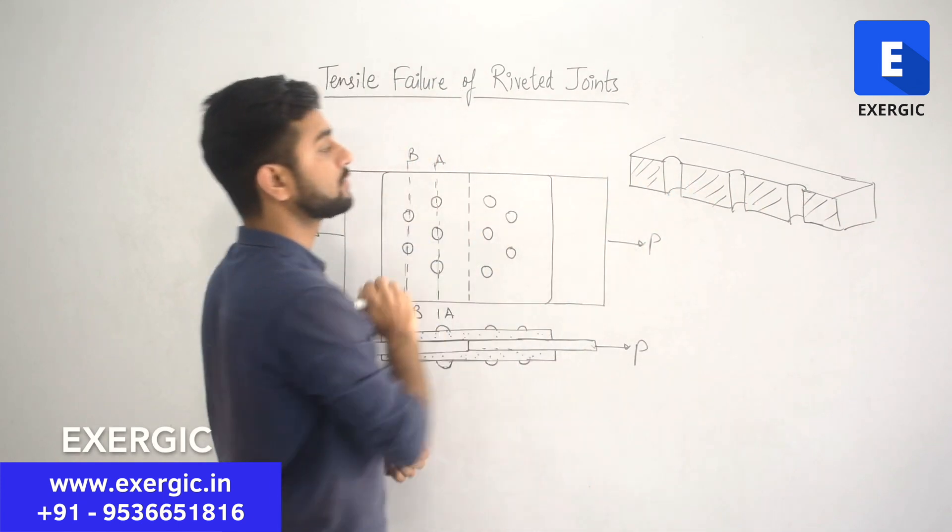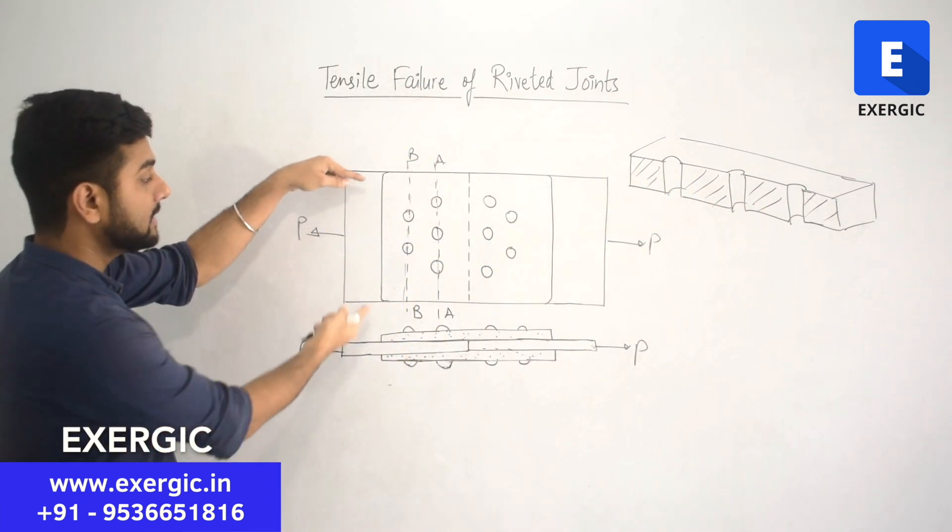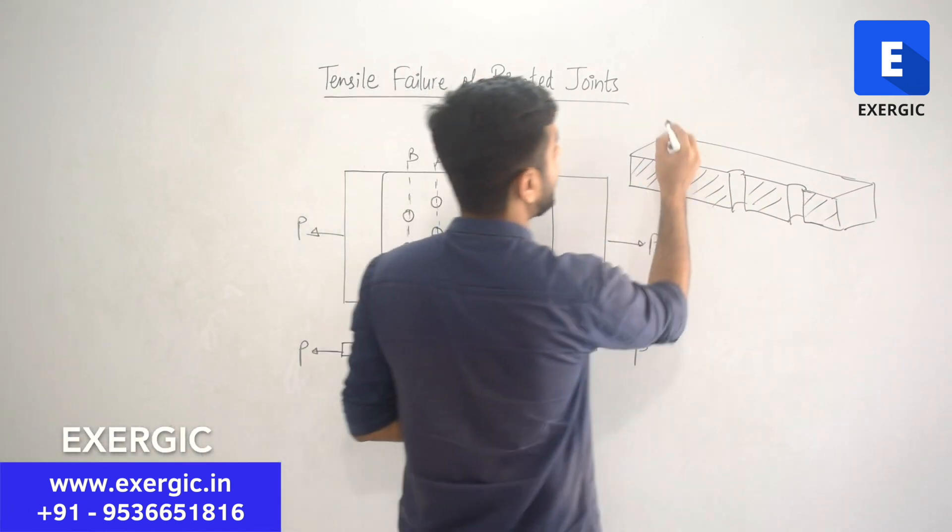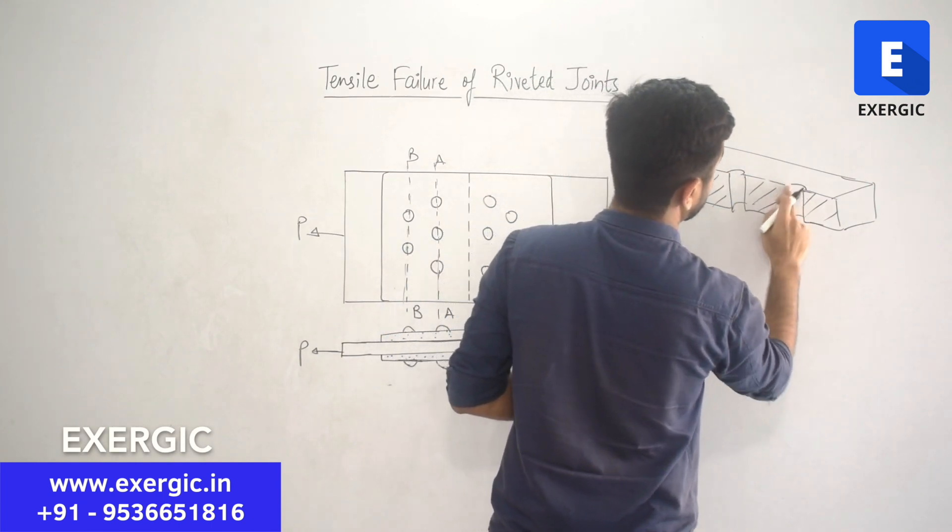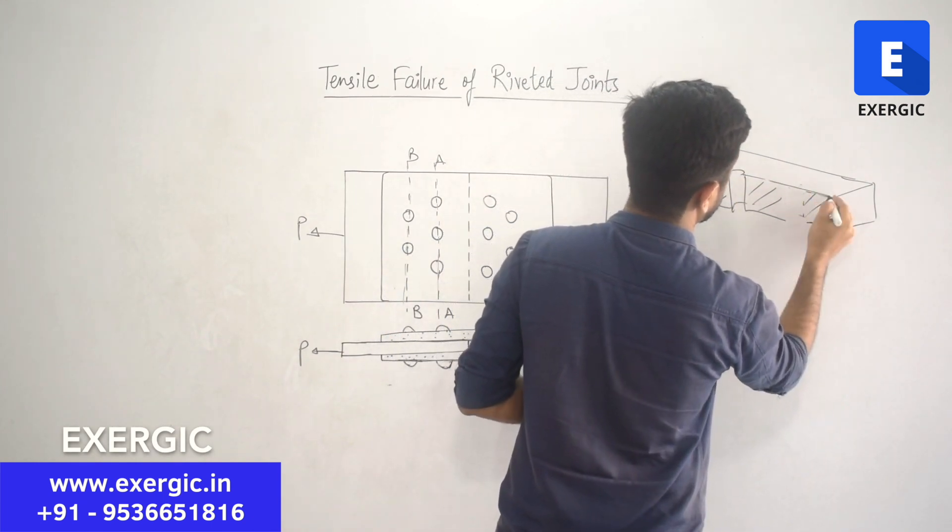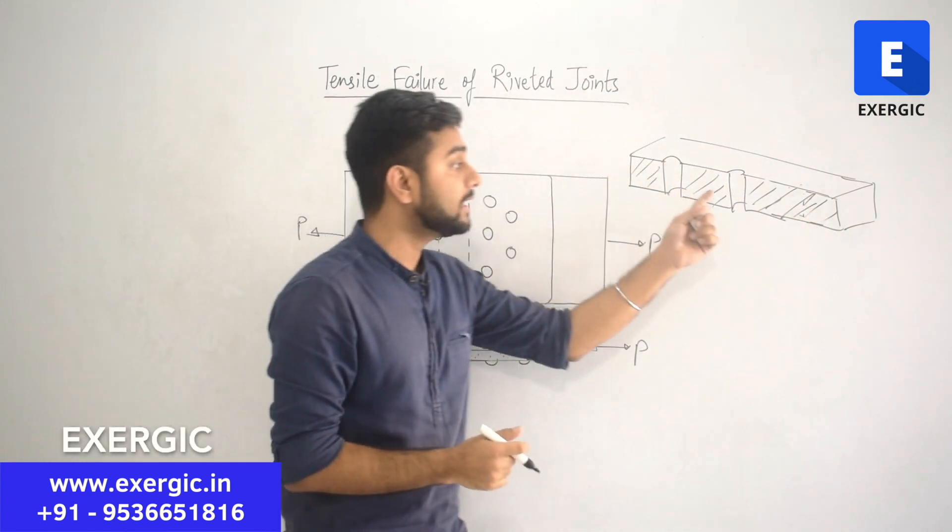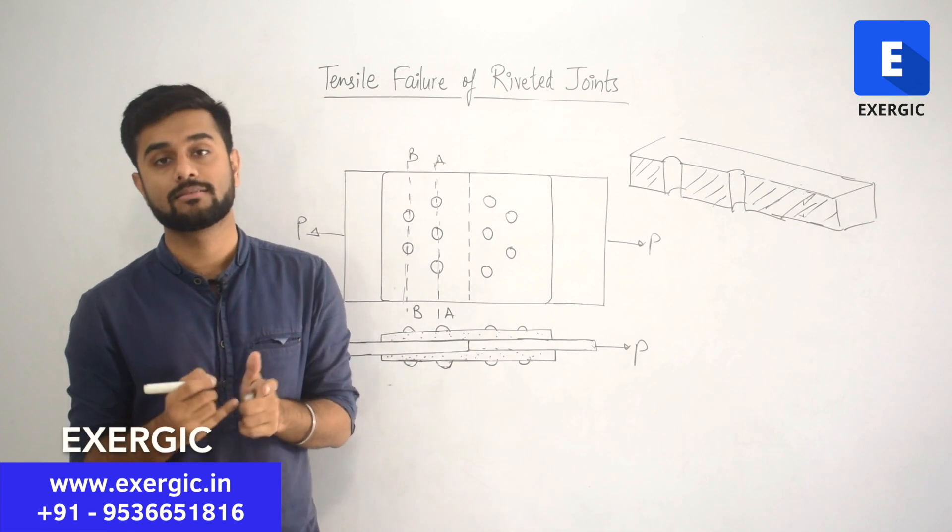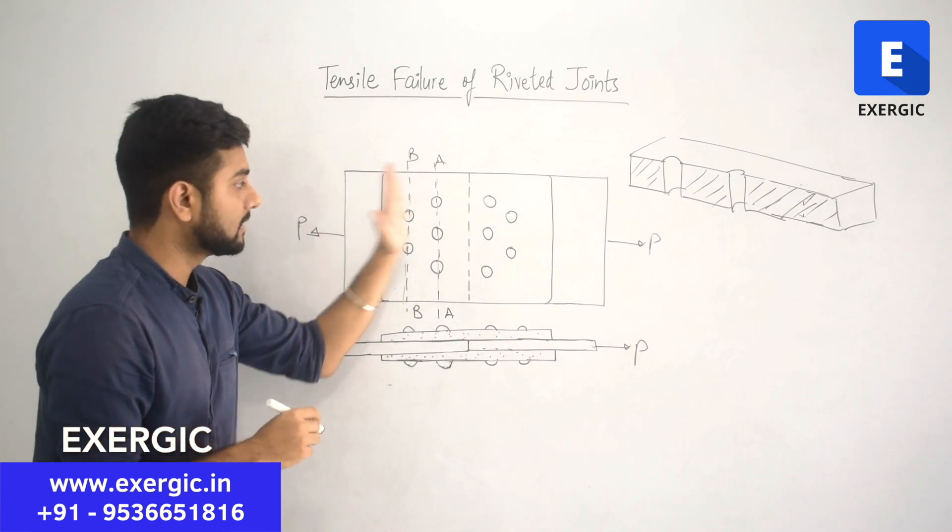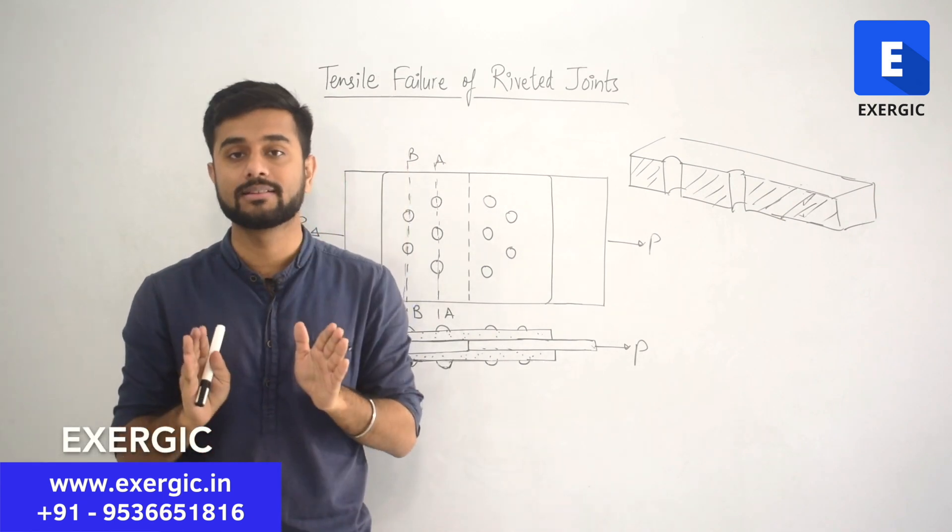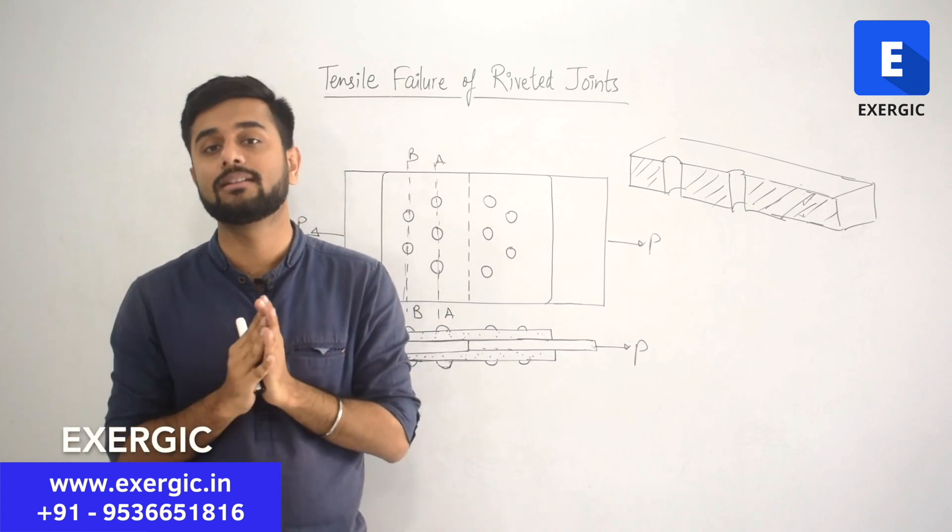This area needs to get failed for 3 rivets in the same width. But when it has only 2 rivets, I am just removing 1 rivet. When it has only 2 rivets, then the area which is needed to be failed will increase. Each section if they have different number of rivets will have different tensile strength.